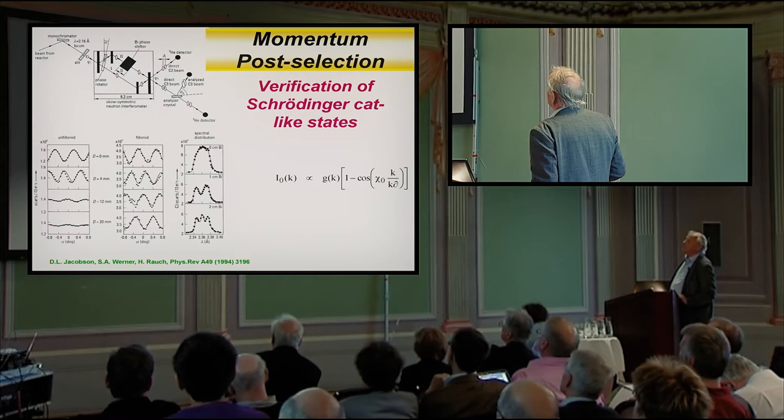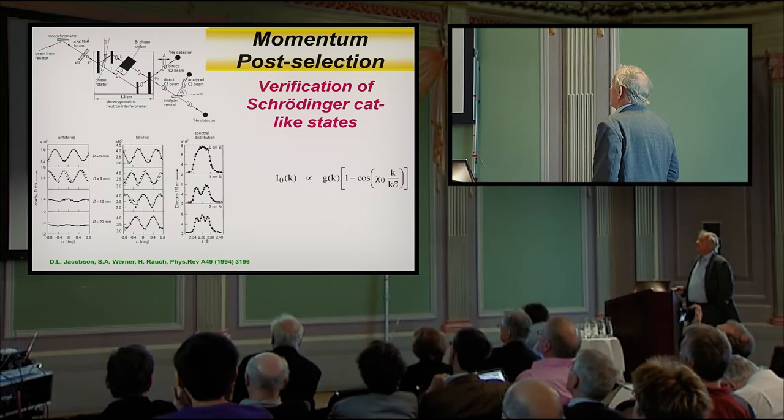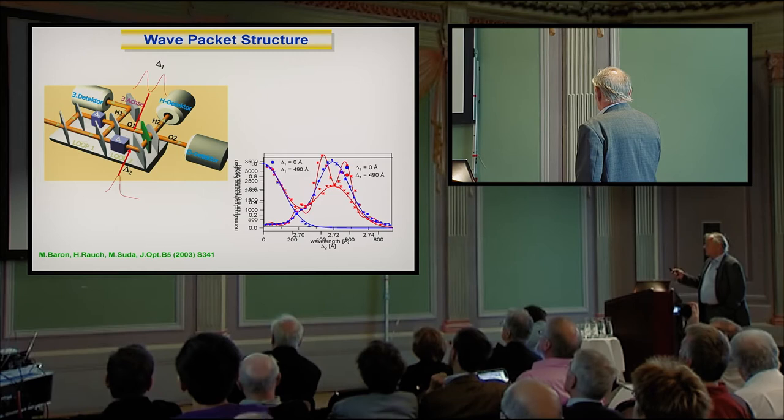And in the momentum space, you see these wiggles that were the first measurements. In the meantime, we see that much better. But in the momentum space, you see the effect in the whole beam, whereas the normal interference disappears.